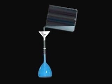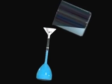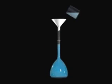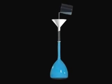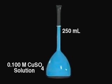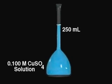We then add water and swirl the flask to ensure good mixing with the added water. More water is added to bring the volume to the mark on the flask that indicates precisely 250 milliliters. We now have our final solution of 0.100 molar copper sulfate.